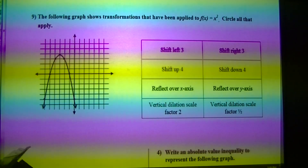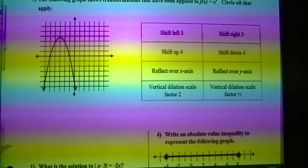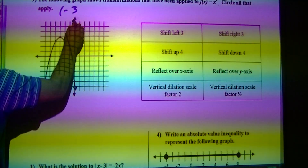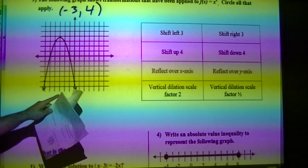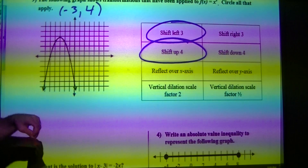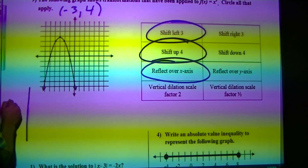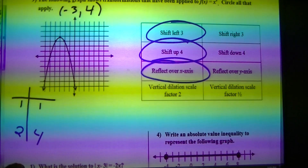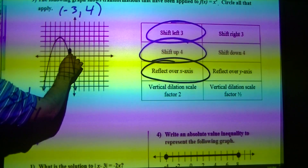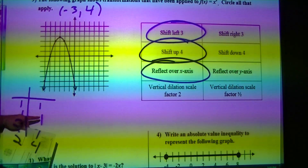Moving on to the next page. The numbers look a little off, but that's okay — it's a show of what transformations are taking place. My anchor point is negative 3, 4. So what's happening: I shifted left 3, shift up 4, reflected over the x-axis. Here's how you figure out the dilation — normally my points are 1, 1 and 2, 4. Looking at where my points are now: 1 right, 1 down, and 2 right, 4 down. So there really was no vertical dilation of any type, because these stayed the same.